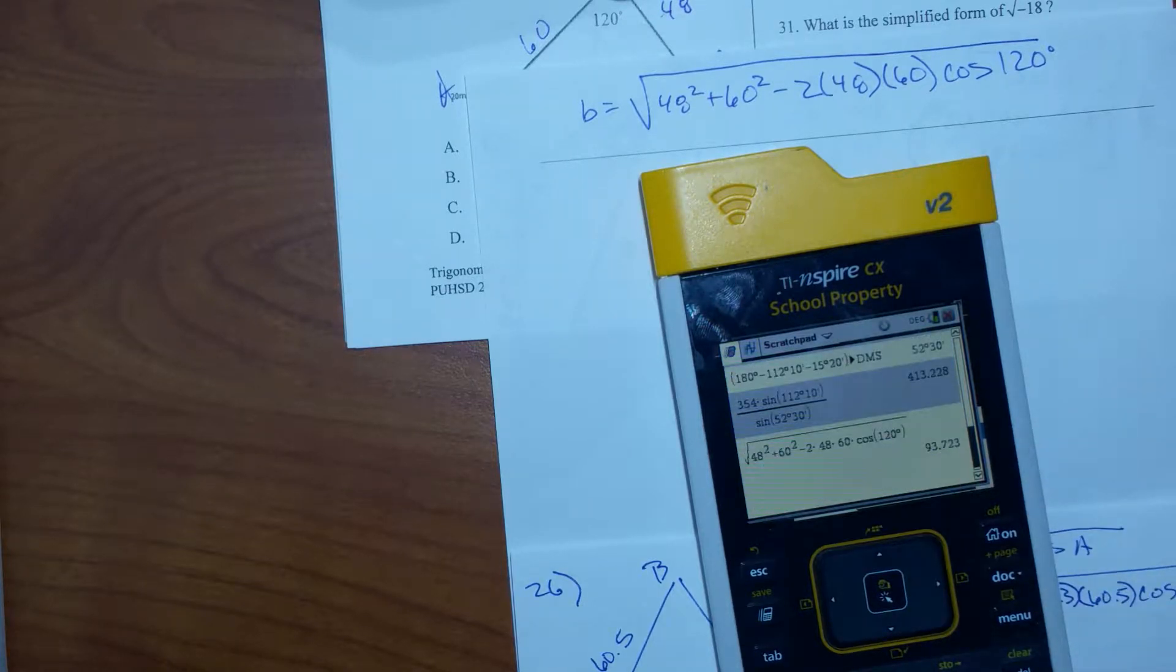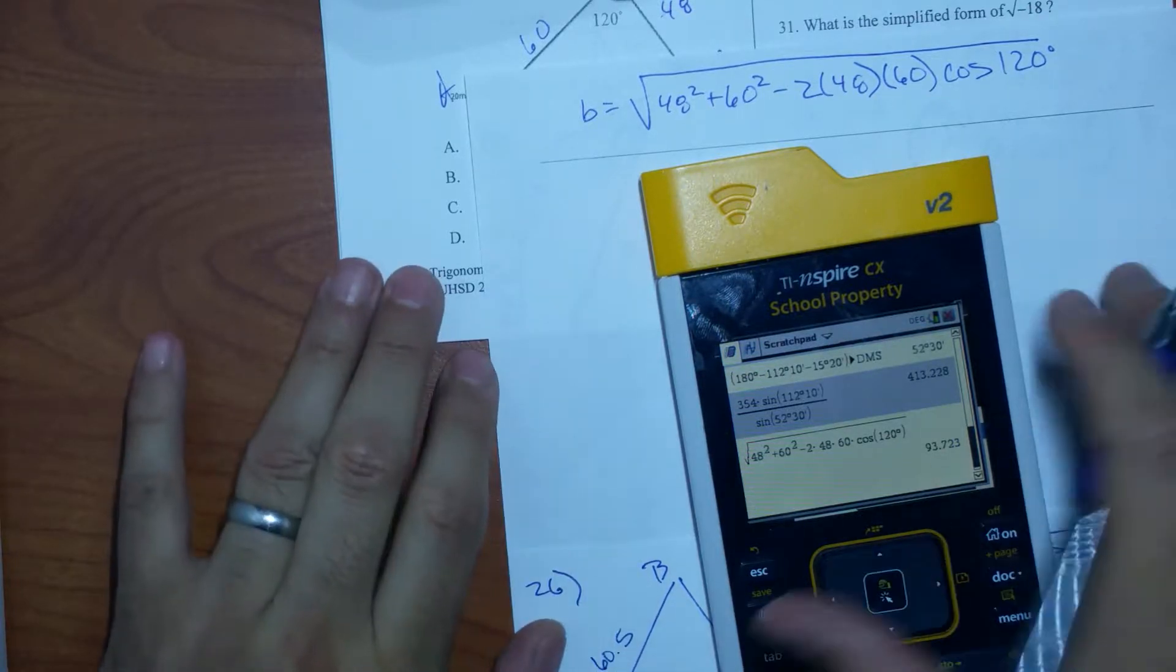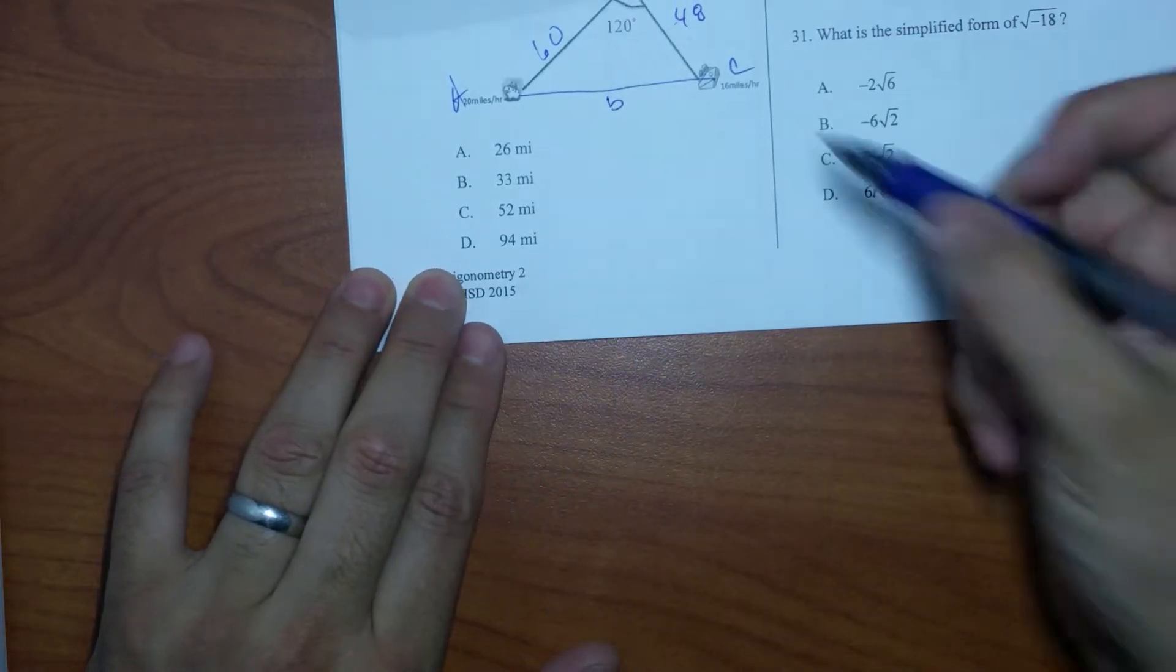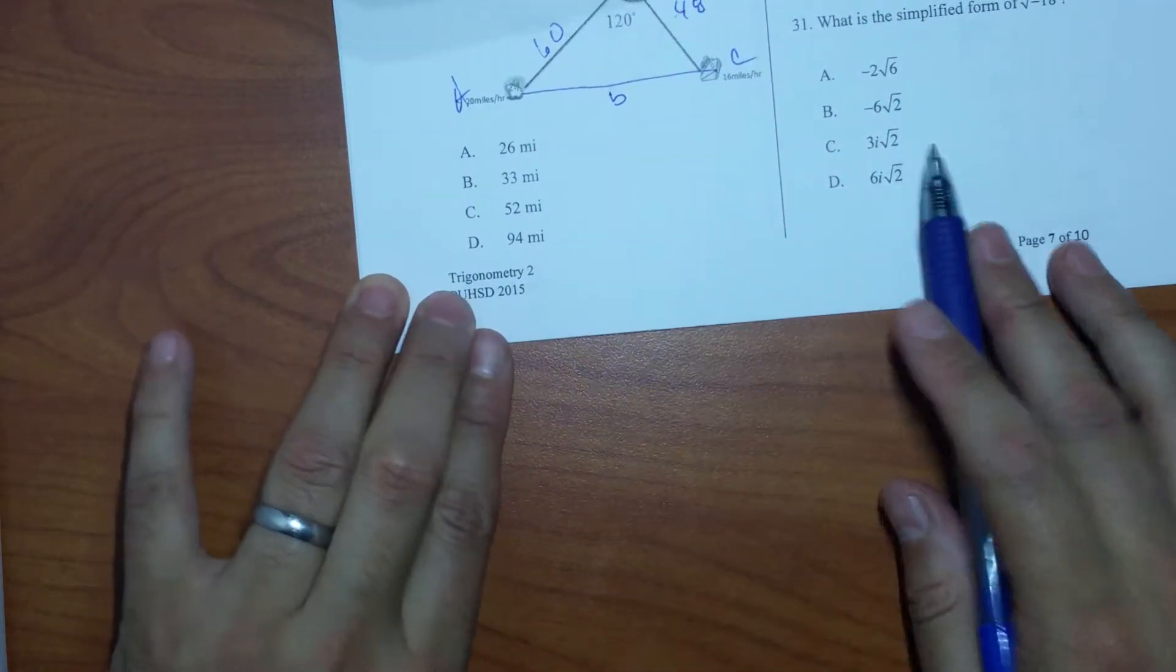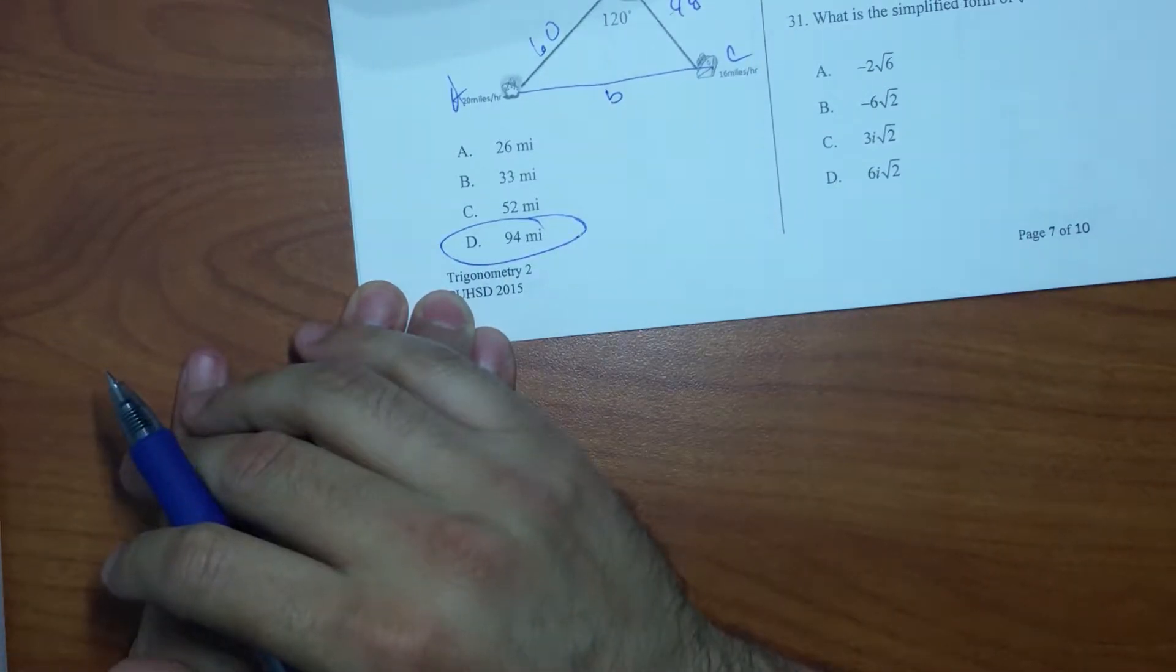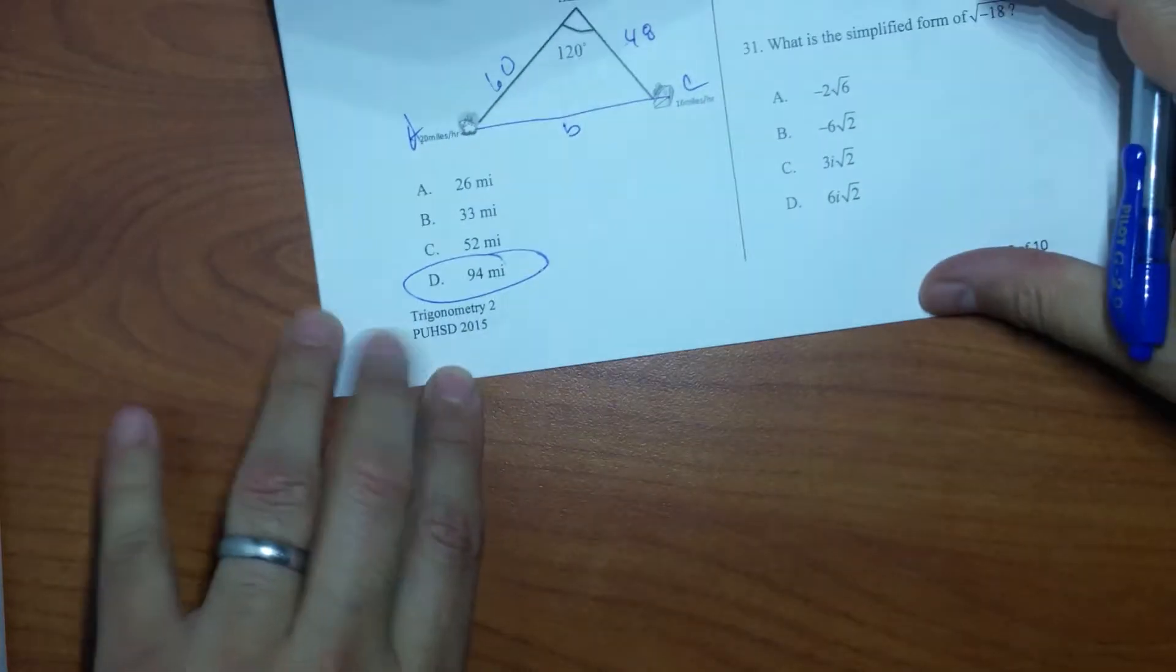Let's go ahead and plug that in the calculator. And we come up with 93.7, so that should be 93.7 miles. And it said rounding it, that's going to give me an answer of D, about 94 miles.